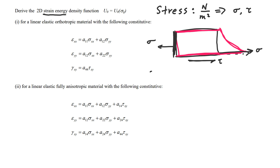There's also strain. Strain is a measurement of deformation, and it has units of displacement over length — usually written as a percentage or something like that. We have two types of strain as well: longitudinal strain, given as epsilon, and shear strain, given as gamma.